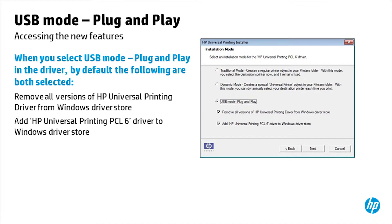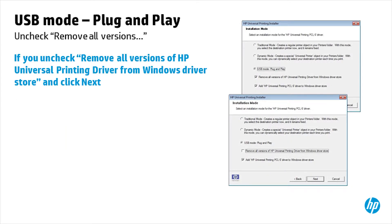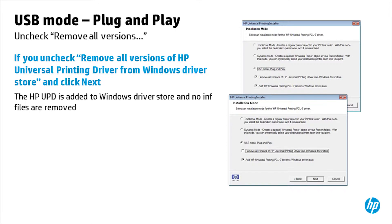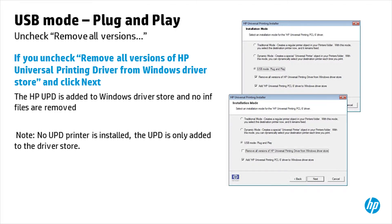Add HP Universal Printing PCL6 Driver to Windows Driver Store. If you uncheck Remove all versions of HP Universal Printing Driver from Windows Driver Store and click Next, the HP UPD is added to Windows Driver Store and no INF files are removed. Note: no UPD printer is installed — the UPD is only added to the Driver Store.